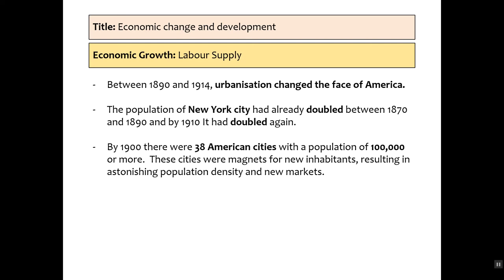In terms of labour supply, we've got massive amounts of urbanisation. New York City doubles between 1890 and 1910 and doubles again. By 1900, there are 38 cities with a population of over 100,000. That means there are more people, more markets to buy goods, and it's more densely populated, which means you only have to send goods to one location for them to be sold. It's also a huge supply of labour.